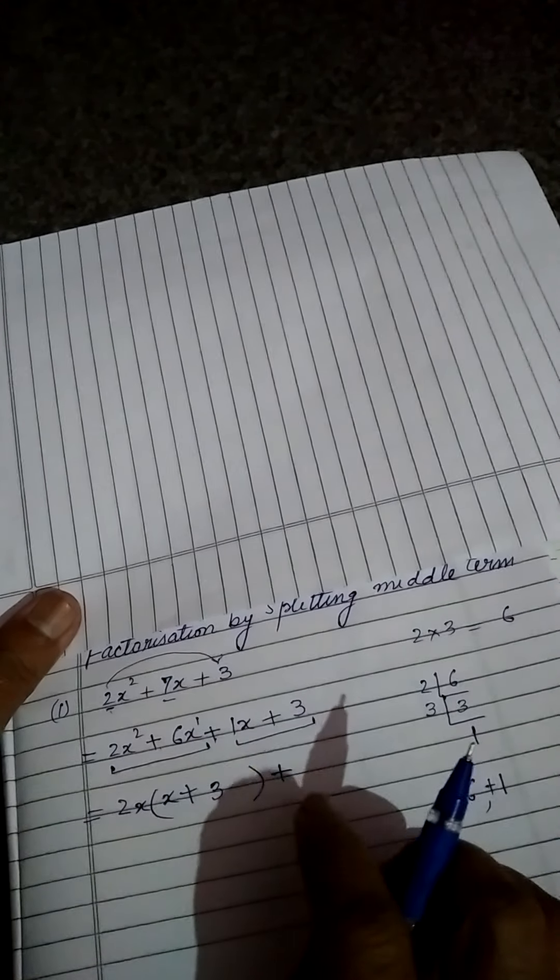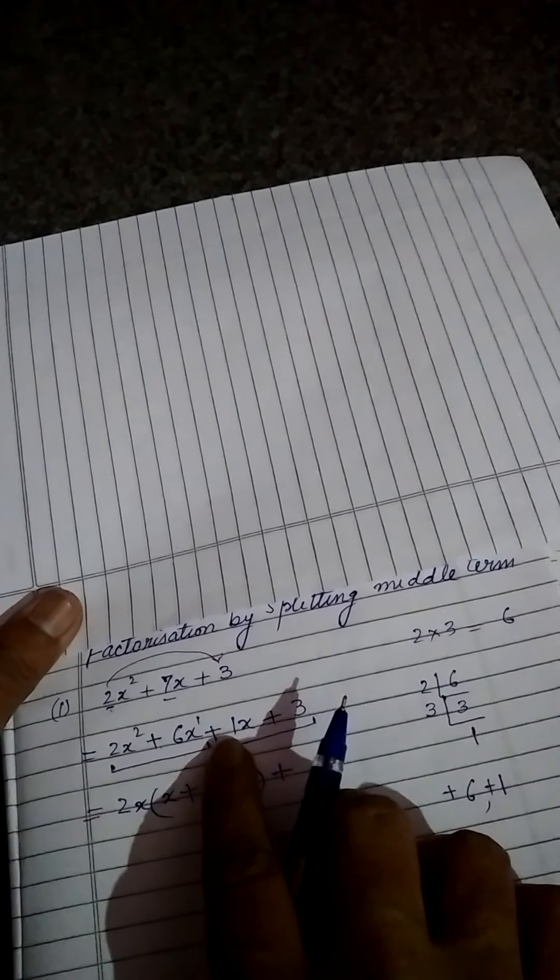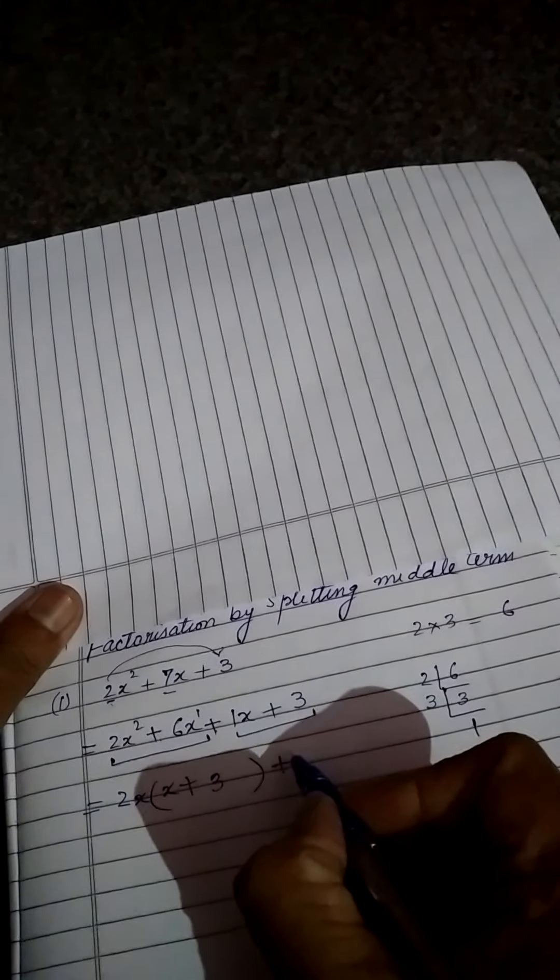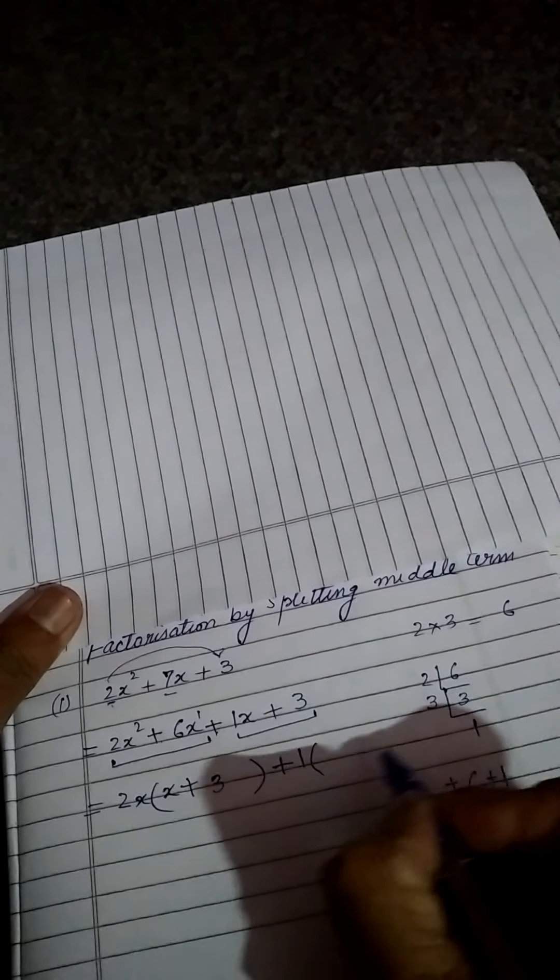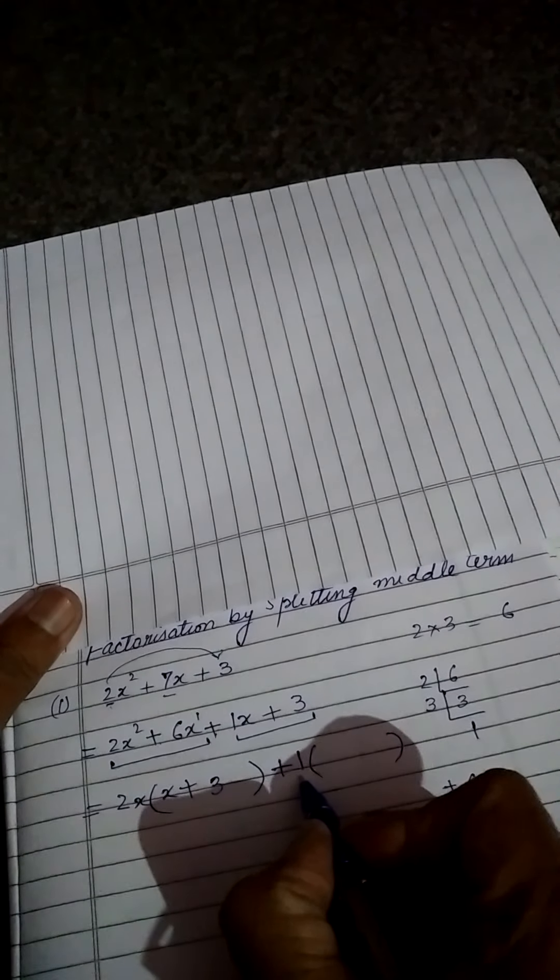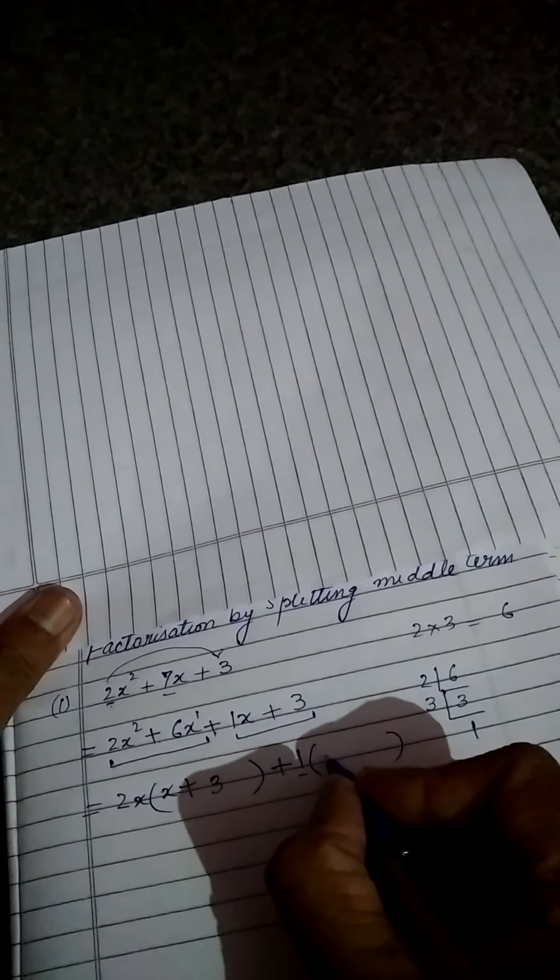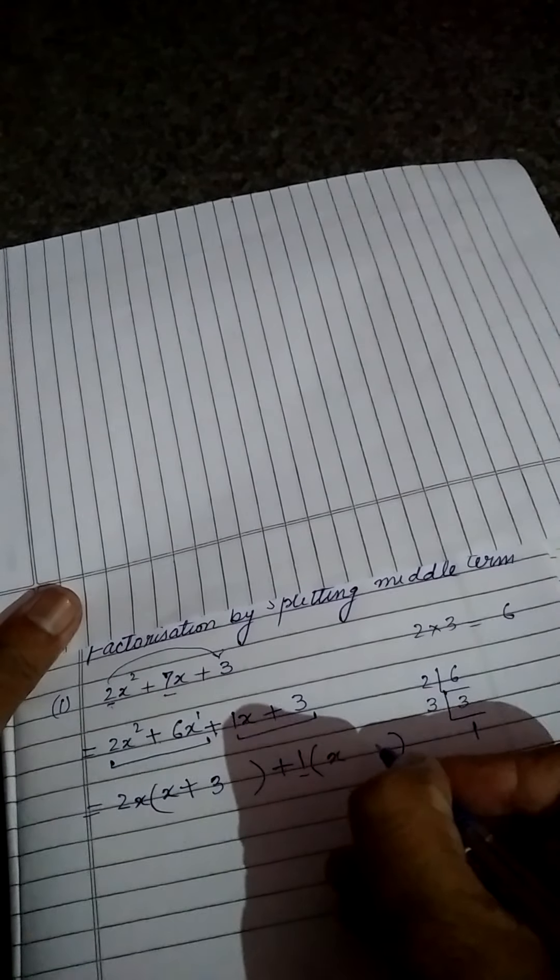Now see what is common in these two. Nothing is common. Here 1, here 3. But we know that every number will go on 1's table. So we will take when nothing is common, then 1 will be common. So we will take 1 common. And inside, when we have taken 1 common, so no need to think. Same to same will be written inside. Only no need to write 1. If you want to write, it is okay. So x plus 3 will come.